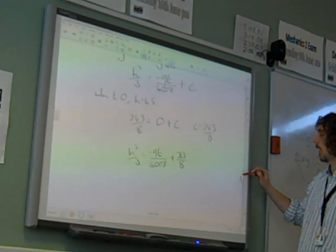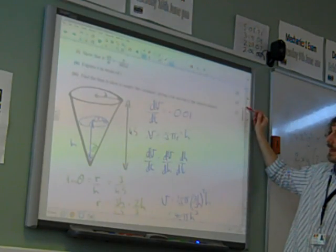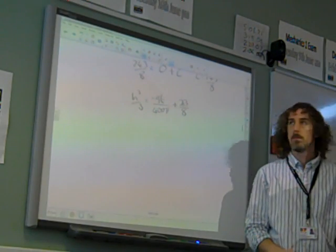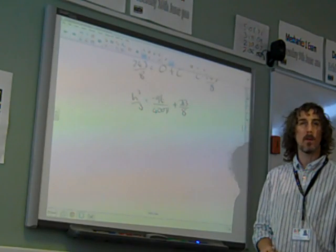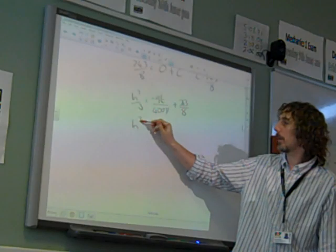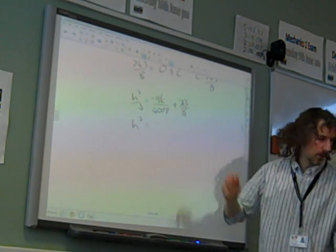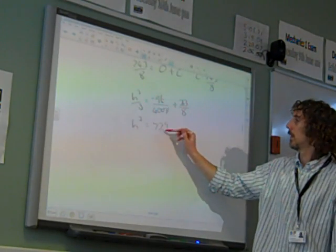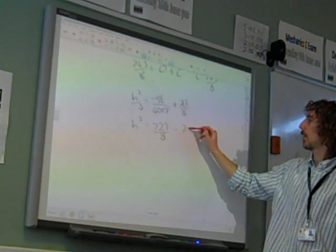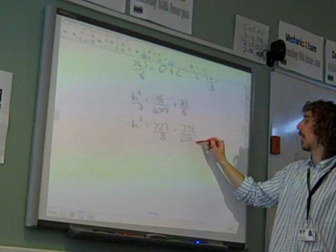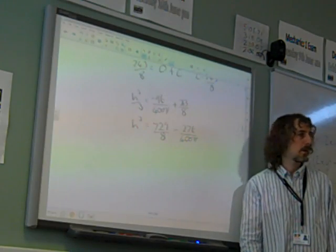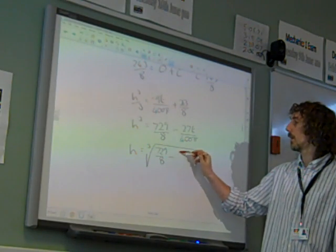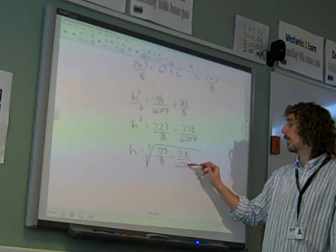And the question says, remember, find an expression, express h in terms of t. So I've got to get h on its own. Well, I'm going to multiply by 3 and then cube root it, that's the way to go with this. So h, not square root, cube root h is, let's do it that way around, so 243 times 3 is 729 over 8 minus 27t over 400 pi. And then cube root it, h is the cube root of 729 over 8 minus 27t over 400 pi.